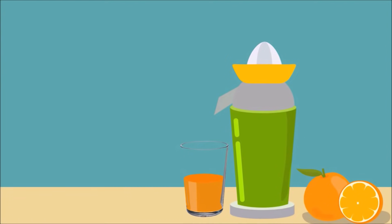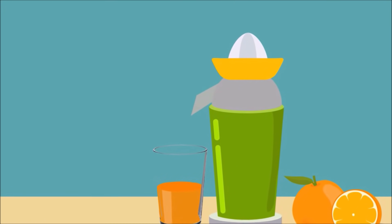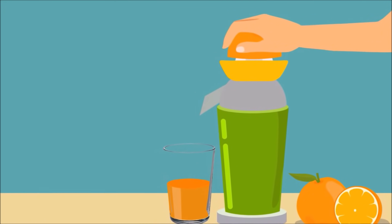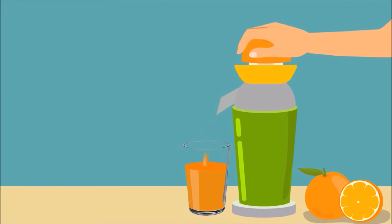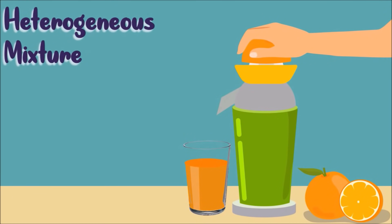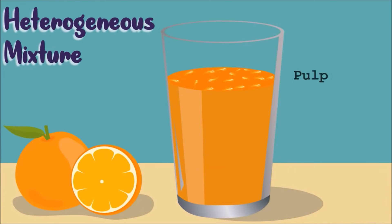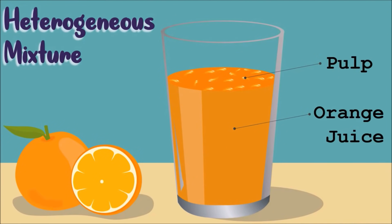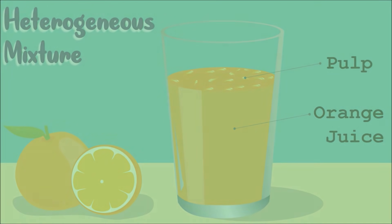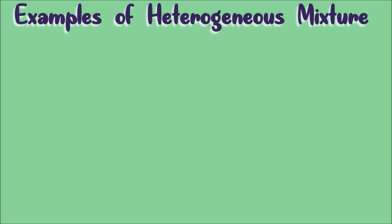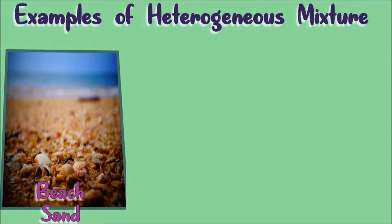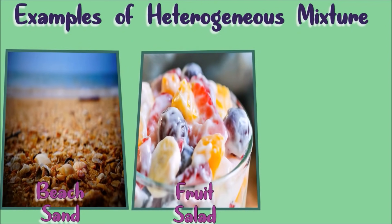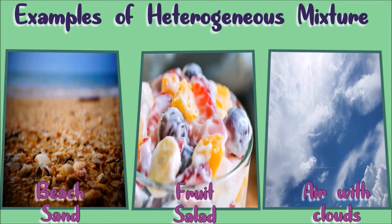For example, a freshly squeezed orange juice or dalandang juice is a heterogeneous mixture of juice and pulp. The pulp component floats in the juice component. Some other examples of heterogeneous mixtures are beach sand, fruit salad, and air with clouds.